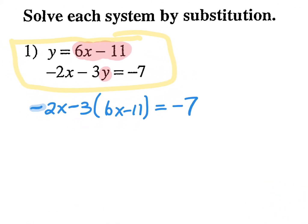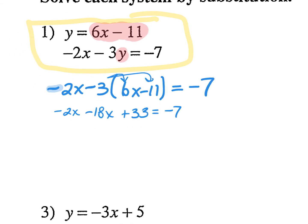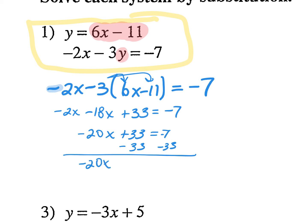Now go through and solve the equation like you normally would. Distribute that negative 3 first. So I have negative 2x, and negative 3 times 6 is negative 18x. Negative times a negative is a positive. Equals negative 7. Combine like terms: negative 2 and negative 18 gives negative 20x plus 33 equals negative 7. Subtract 33, so I have negative 20x equals negative 40. Divide both sides by negative 20, and I get x equals 2.